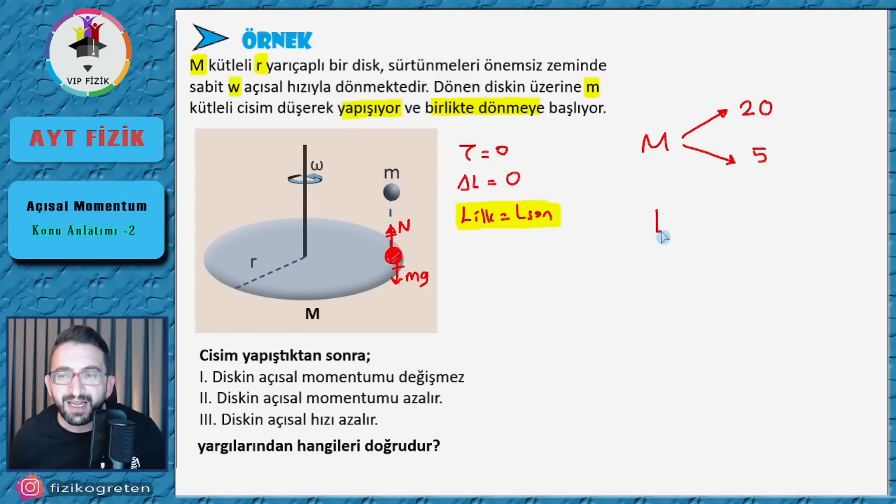Çizgisel momentumun büyüklüğü artar mı? P = M×V ve L = M×V×R formülünden: L sabit, M sabit, R küçüldü, dolayısıyla V büyür. V büyüdüğünde çizgisel momentum P = M×V de büyür. Yani çizgisel momentumun büyüklüğü artar — doğru. Eylemsizlik momenti azalır — doğru, R'nin azalmasından. Açsal momentum değişmez — doğru, tork yok. Gördüğünüz gibi sorular tamamen açsal momentumun korunumuna göre çözülüyor.